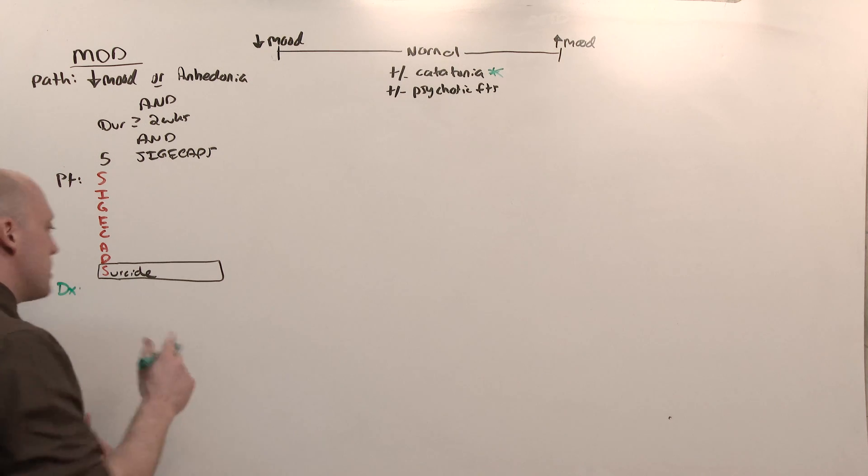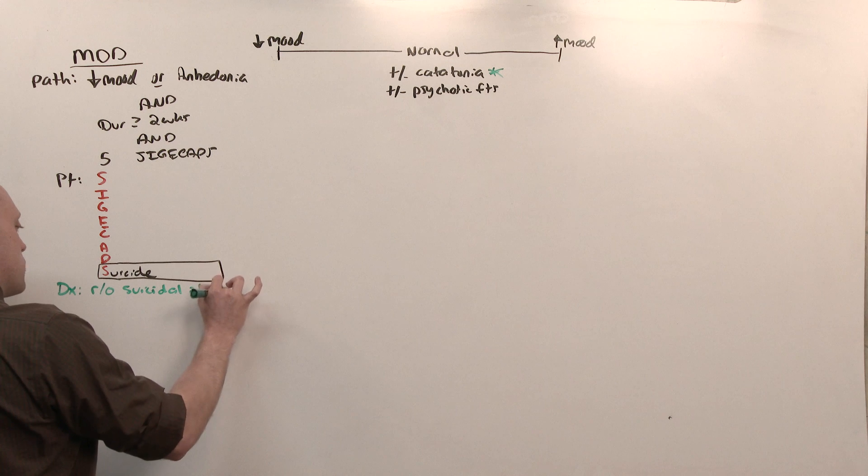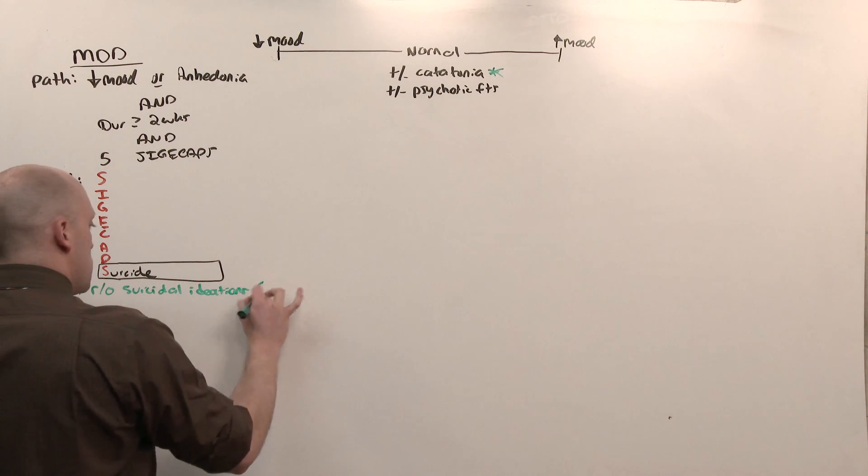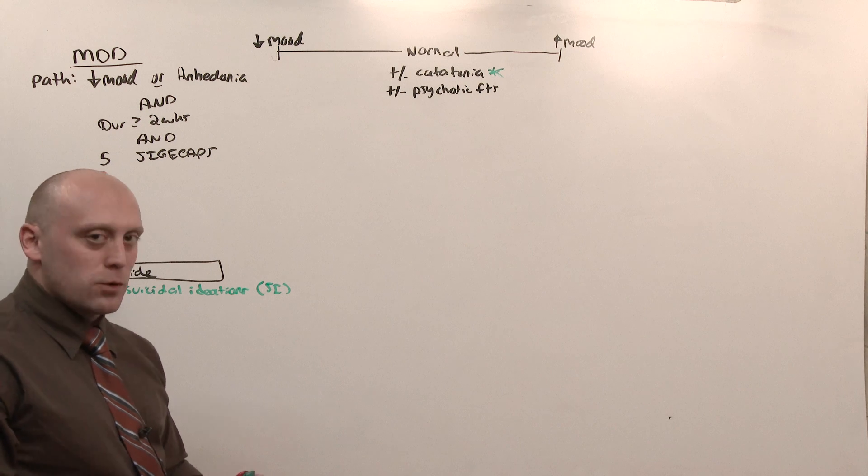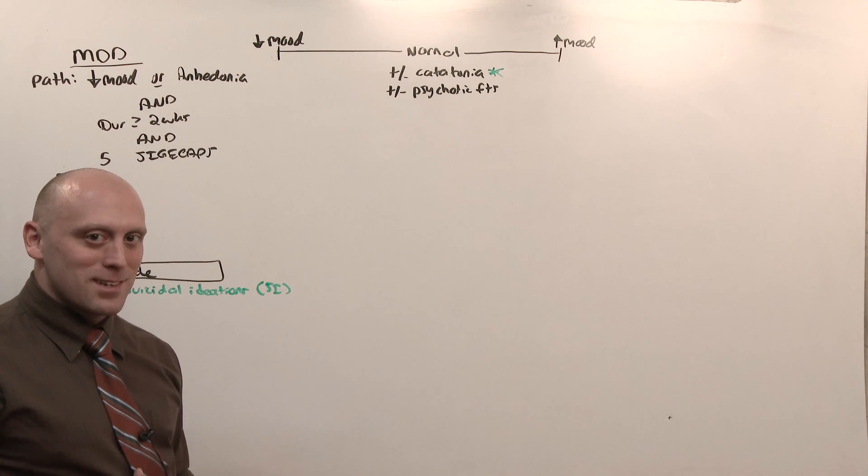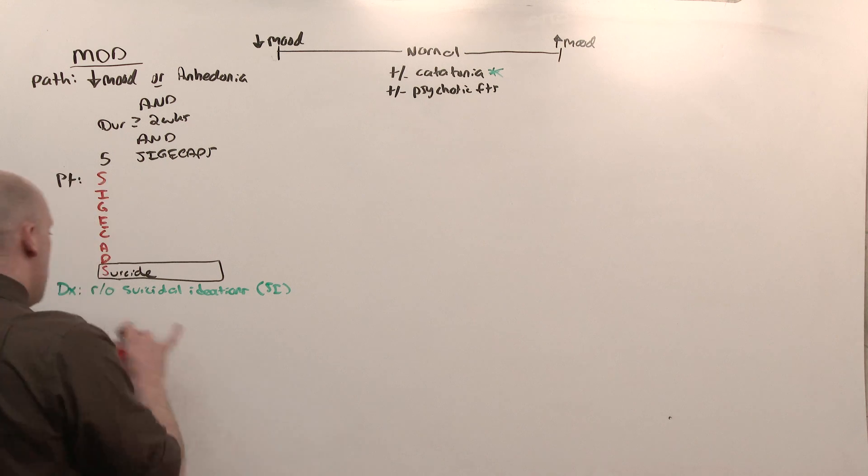When you make the diagnosis of depression, you have to assess for suicidal ideations. You can make the diagnosis of major depressive disorder without suicidal ideations, but what you do for that person right there in the moment is going to be dependent on how close to suicide are they? That is to say, the treatment for someone who has suicidal ideations and has a plan and a means to carry out that plan.